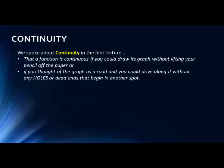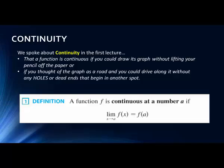Another analogy is if you thought of the graph as a road — the line that identifies your function on your graph — and you could drive along it and there weren't any holes, or the road didn't disappear and suddenly reappear in another spot. That's another way of conceptualizing continuity.